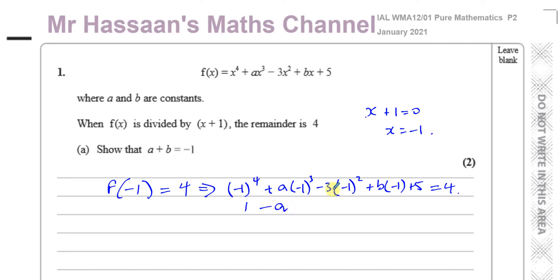Then you got -3 × (-1)^2. Now (-1)^2 becomes positive 1, but you're multiplying by -3, so it becomes -3. And you have b × (-1), which is -b, plus 5 equals 4.